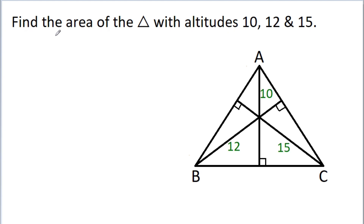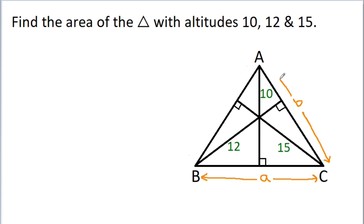In this video, we have to find the area of the triangle with altitude lengths 10, 12 and 15. Here, if I assume the length of BC is A, length of AC is B, and length of AB is C, then there is a property in the triangle that the product of an altitude and its corresponding side are equal.